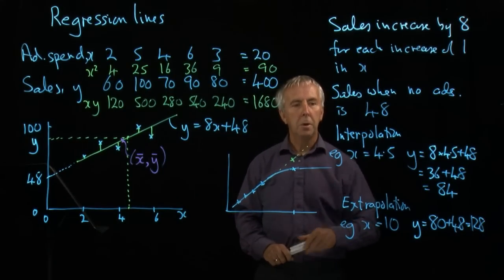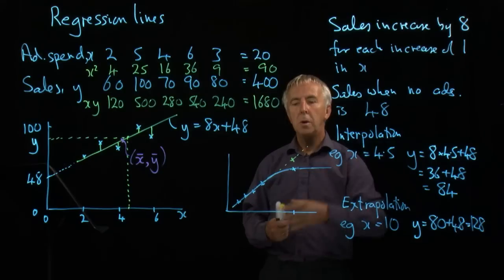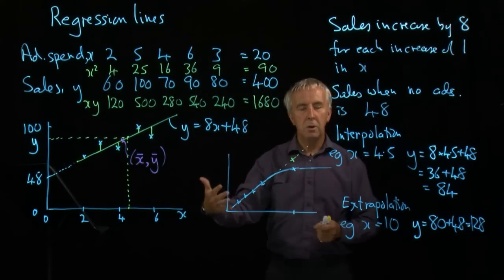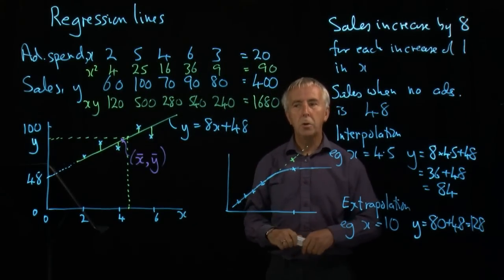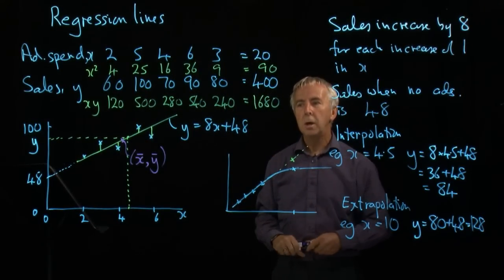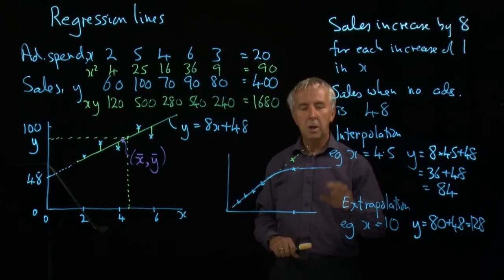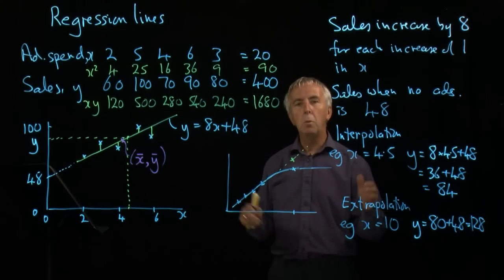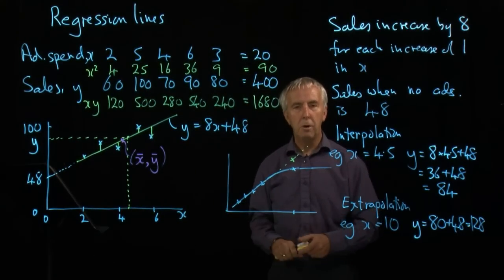We need to be very careful. But interpolation, where we're working with a value of x within the existing range, is usually very safe. And in fact, it's a good idea, and it's what we do with the line of best fit. But we need to be very careful about extrapolation, putting in values of x that weren't in the original data range.